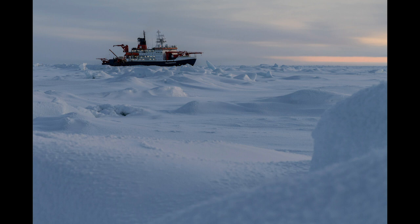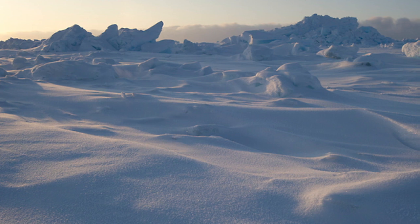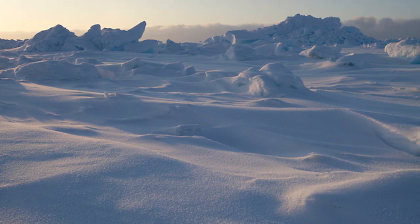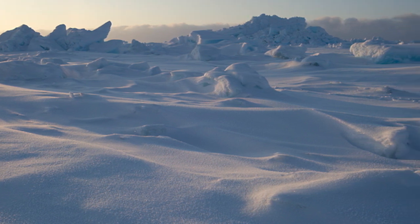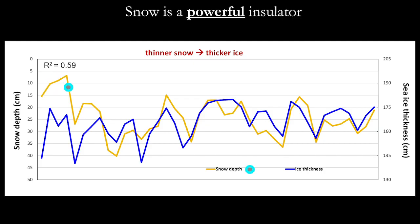Once sea ice forms, it acts as a barrier to ocean heat escaping into the atmosphere, which helps keep the ice warmer and actually slows down its growth quite a bit. As sea ice grows thicker, it becomes more difficult for ocean heat to transfer through the ice and into the atmosphere. Throughout autumn, winter, and spring, snow may fall and accumulate on the sea ice, especially as it's beginning to form. Snow acts like a gigantic blanket on the sea ice cover, keeping it warm and slowing its growth as well. The timing and the amount of snow that accumulates is really important for knowing how quickly or slowly the sea ice will grow.